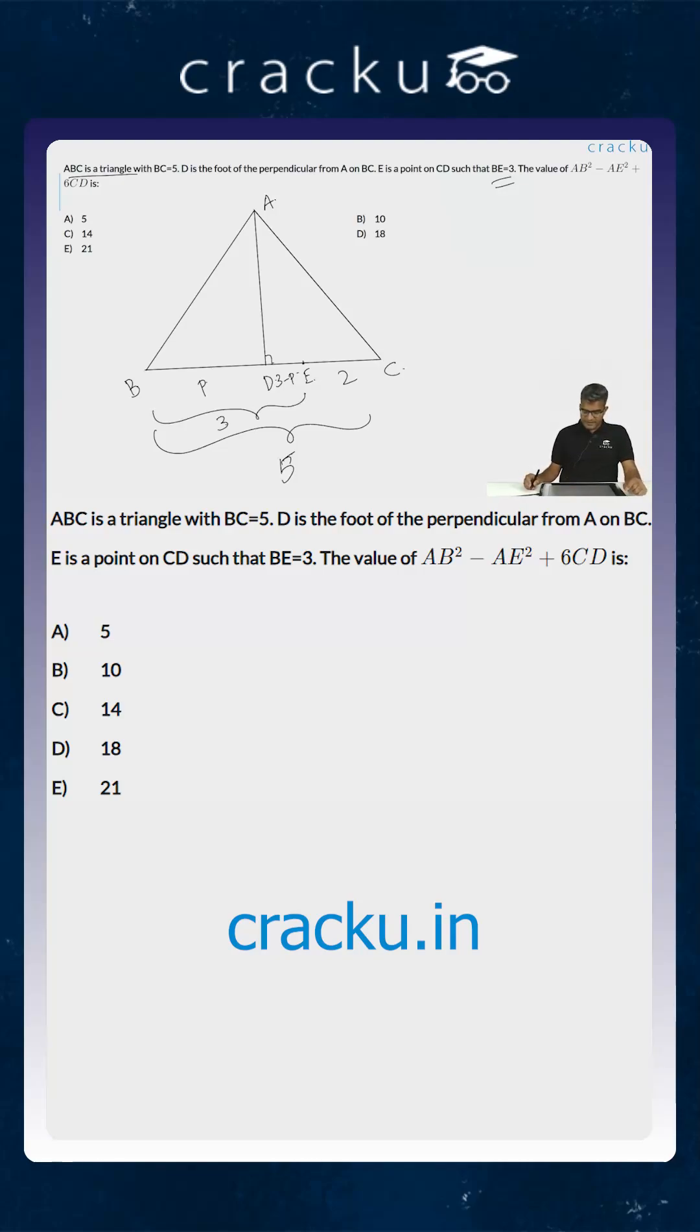Now what we are required to calculate is the value of AB square minus AE square plus 6CD. So we have AE square over here. What is AB square? Because this is a perpendicular, AB square is equal to AD square plus BD square.